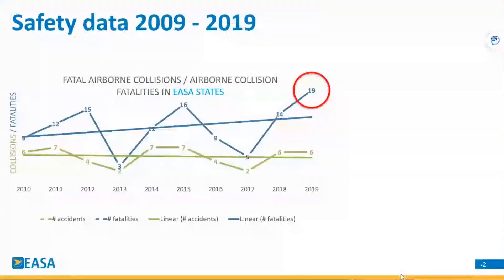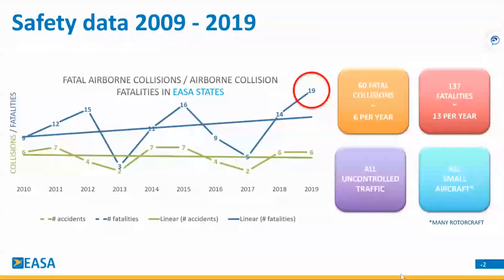First, some data collected between 2009 and 2019. We can see that we have a number of airborne collisions and fatalities related to the collision issues, and the trend is rather negative. We had 60 fatal collisions — 6 per year — and 137 fatalities, 13 per year. All happening in uncontrolled traffic with small aircraft, including many rotorcraft.